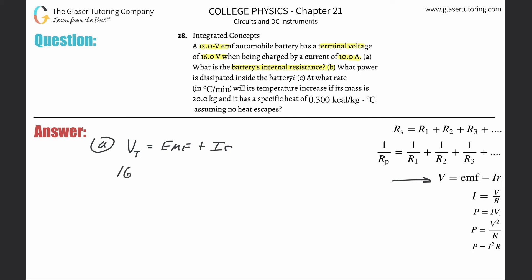Now all we have to do is plug in the values. The terminal voltage is 16, the battery's EMF is 12, and the current is 10. We need to calculate internal resistance. Subtract 12 from both sides, so 4 equals 10r, therefore r equals 0.4 ohms.